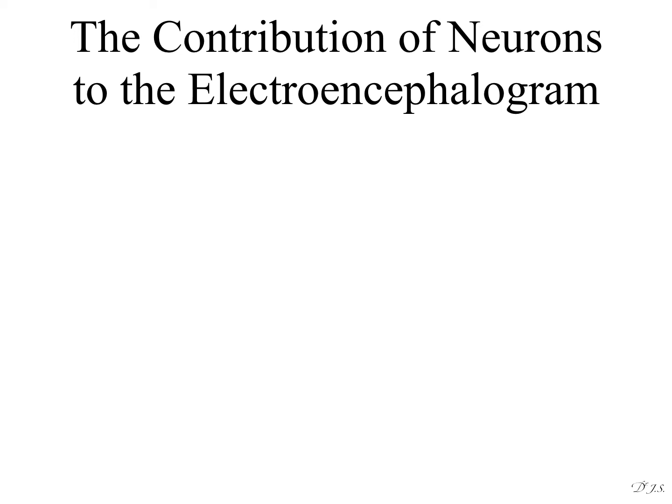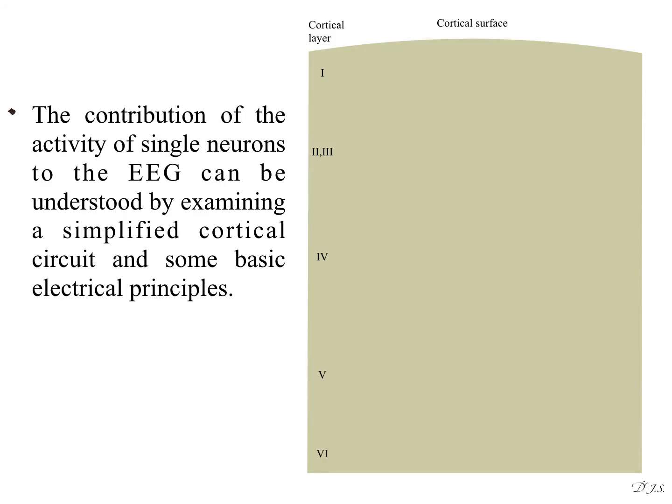The contribution of neurons to the electroencephalogram. The contribution of the activity of single neurons to the EEG can be understood by examining a simplified cortical circuit and some basic electrical principles. Pyramidal neurons are the major projection neurons in the cortex.